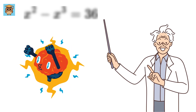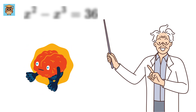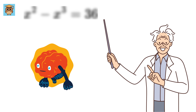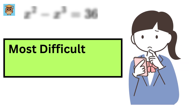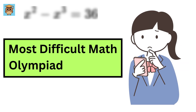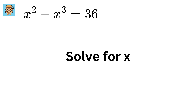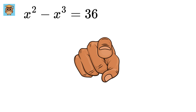Today, let's tackle an interesting algebra problem that challenges our problem-solving skills. This is considered one of the difficult Math Olympiad questions, so stay tuned. Our goal is to find the value of x that satisfies this equation: x squared minus x cubed equals 36. Can you solve it?